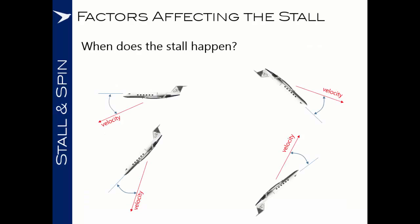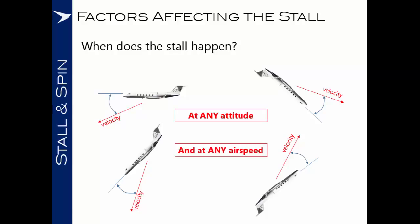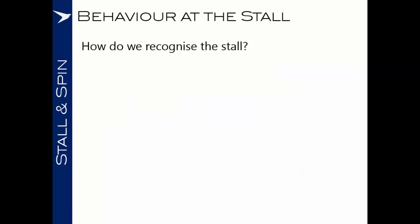In this diagram, every single one of these airplanes has exceeded its critical angle of attack and stalled. So the stall can happen at any attitude and at any airspeed. How do we recognize the stall? I use the acronym SAVAIRS to help remember the behavior of an aircraft at the stall. Any or all of these factors may indicate a stall. The stick position may be unusually far aft, or in the case of fly-by-wire, aft for a longer than usual amount of time.